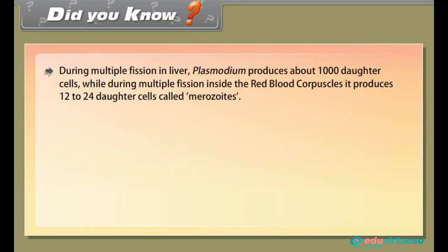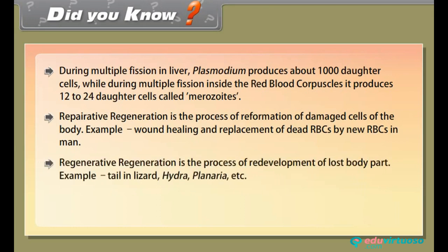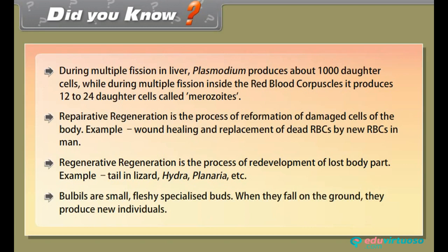Did you know? During multiple fission in liver Plasmodium produces about 1000 daughter cells, while during multiple fission inside the red blood corpuscles it produces 12 to 24 daughter cells called merozoites. Reparative regeneration is the process of reformation of damaged cells of the body — for example, wound healing and replacement of dead RBCs by new RBCs in humans. Regenerative regeneration is the process of redevelopment of a lost body part — for example, tail in lizard, hydra, planaria, etc. Bulbils are small fleshy specialized buds; when they fall on the ground they produce new individuals.